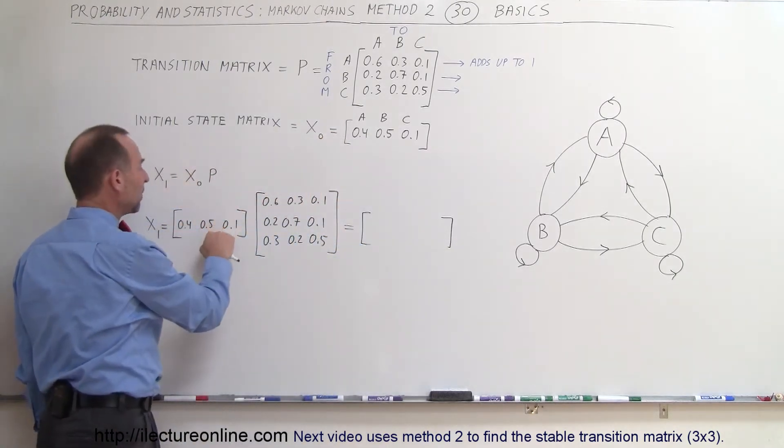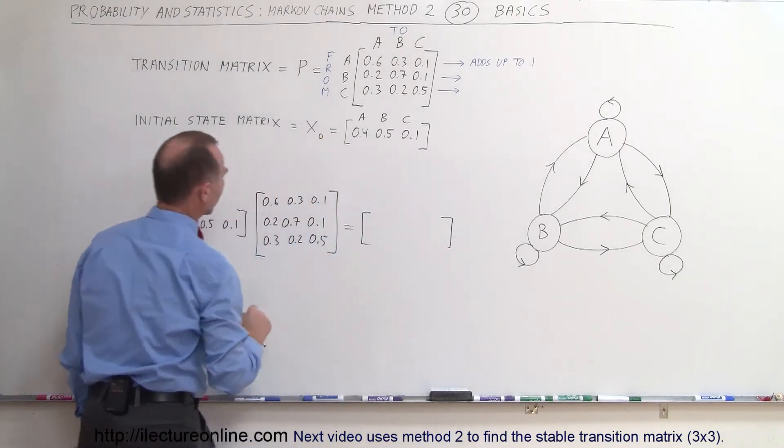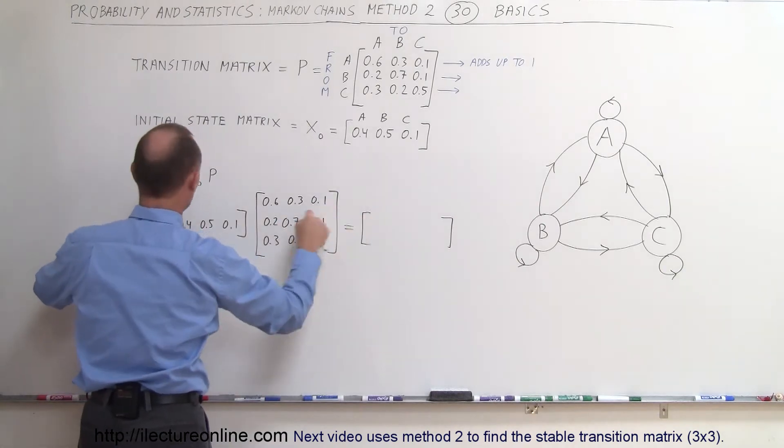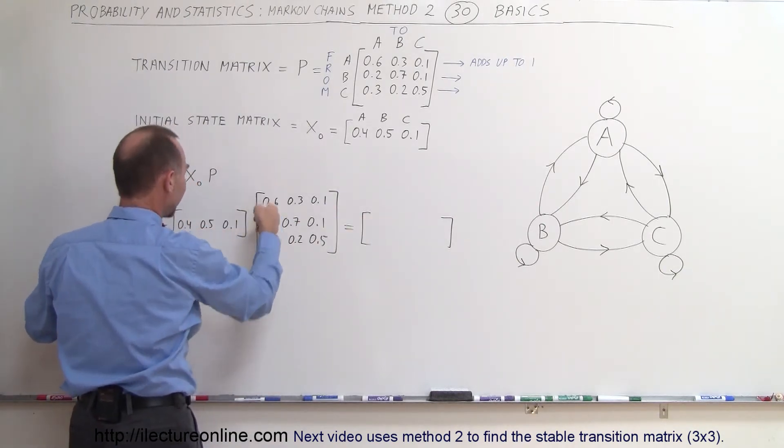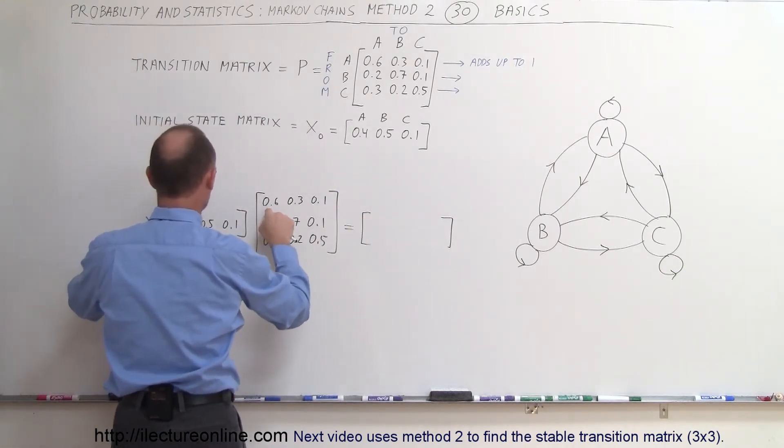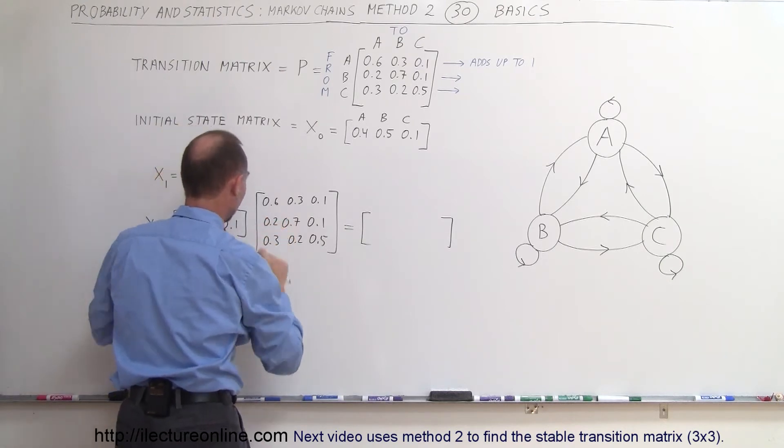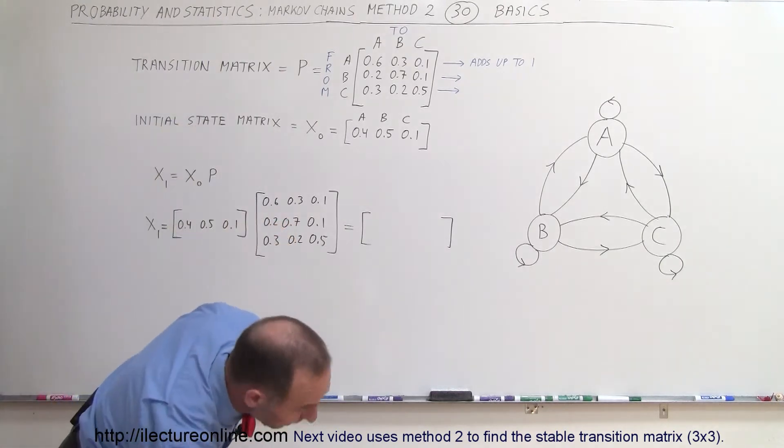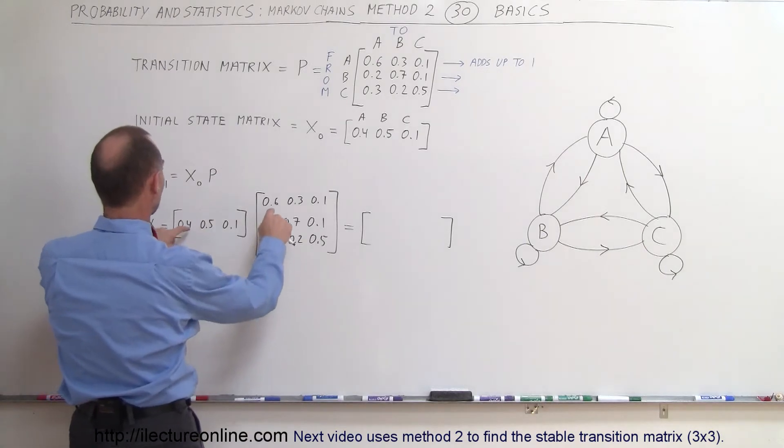So since this is a 1 by 3 matrix we end up with a 1 by 3 matrix over there so here to get the first element we multiply this row by this column so we get 0.4 times this 0.5 times this 0.1 times that we probably want to get a calculator maybe we don't need a calculator let's say that's 0.24 that's 0.34 that's 0.37 so 0.37 is our first element.